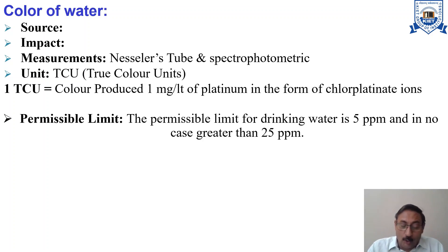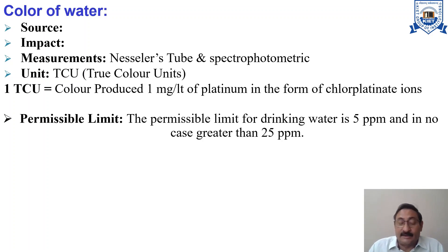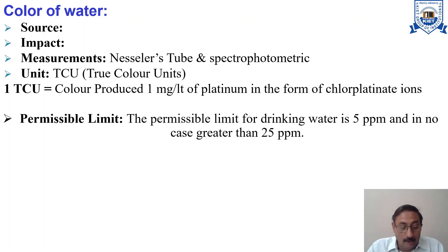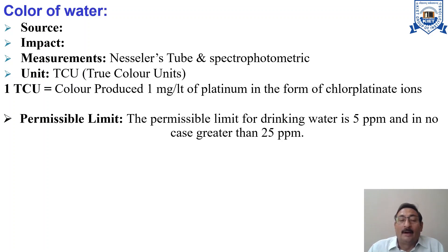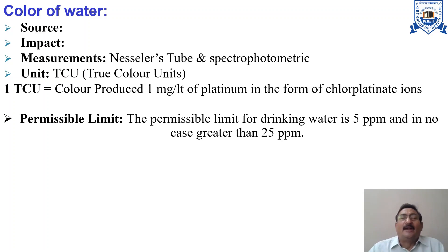Regarding sources of color: after contact with organic debris such as leaves, conifer needles, beets, tannins, acids, and humates, water acquires a yellowish-brown color. Iron oxide causes reddish water, and manganese contributes to brown or blackish color. Industrial waste may add substantial color to water, as thousands of chemicals in industry can impart different types of color.